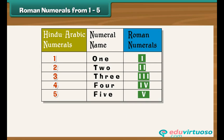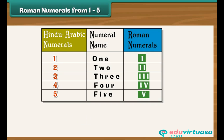V represents the numeral 5. 4 is 5 minus 1, hence it is expressed as IV, meaning I before V, that is 4. Therefore, whenever the Roman numeral I precedes another Roman numeral, it represents a number which is 1 less than the second Roman numeral.